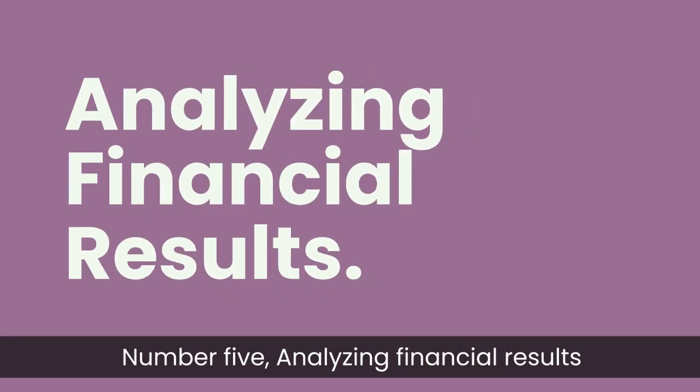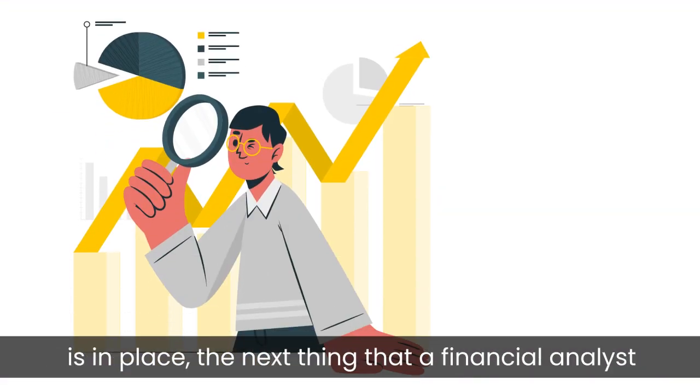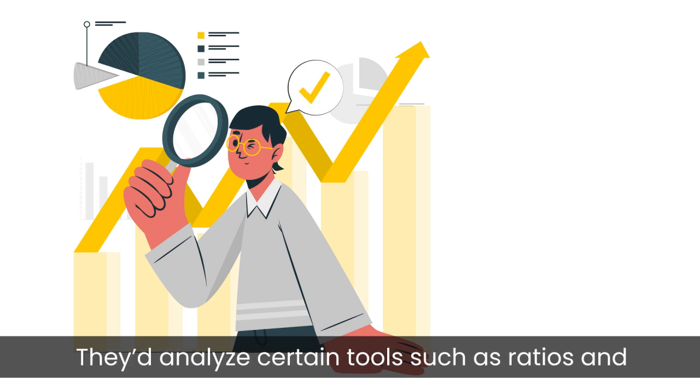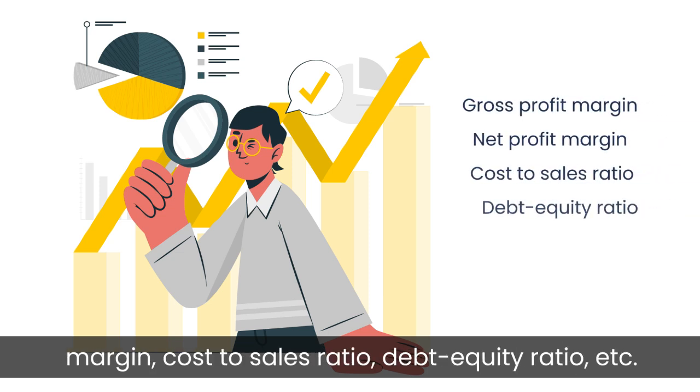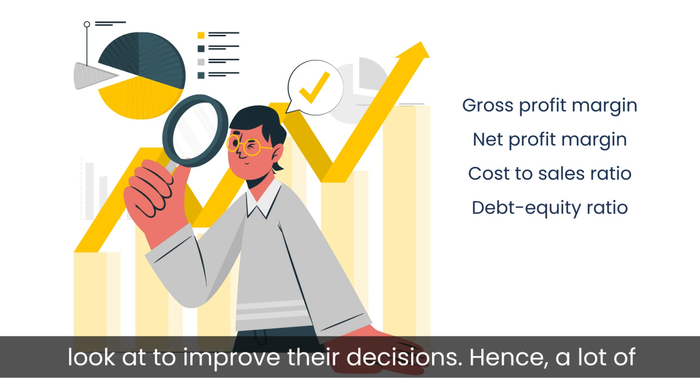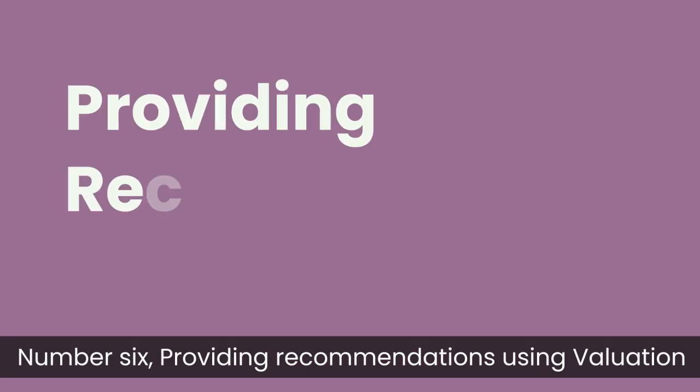Fifth, analyzing financial results. Once the financial models are ready and everything is in place, the next thing that a financial analyst would do is to analyze everything. They would analyze certain tools such as ratios and matrices, including gross profit margin, net profit margin, cost to sales ratio, debt equity ratio, etc. There are many things that financial analysts may look at to improve their decisions. Hence, a lot of time is spent on this part of the work.